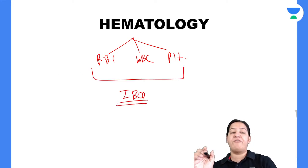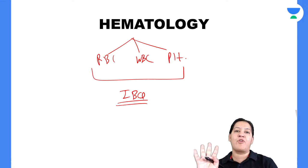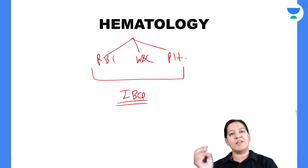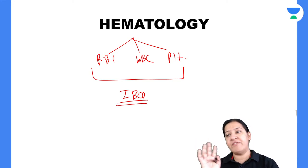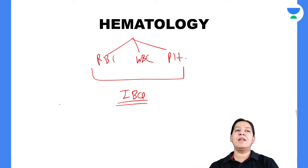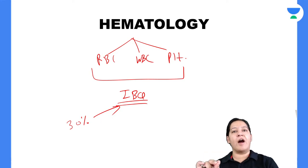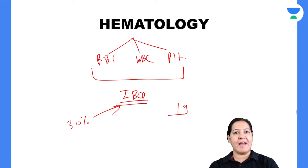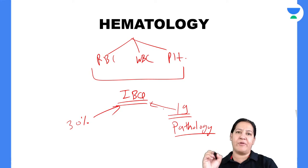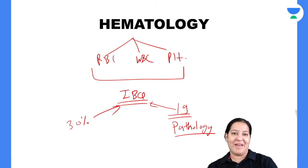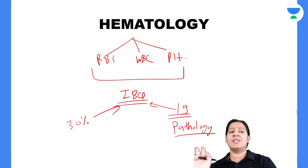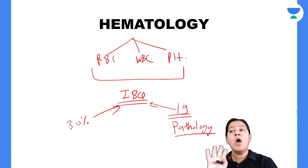All the images I am using for the questions are from Robbins — we are essentially decoding the images of Robbins for your exams. In all exams, whether NEET-PG, FMG, INICET, or NEXT, nearly 25 to 30 percent of questions are image-based. Out of all 19 subjects, pathology is the most vital for image-based questions because in pathology everything is essentially an image.